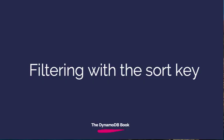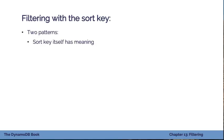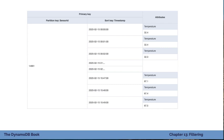Let's move on to the second most common filtering strategy: filtering with the sort key. There are two big patterns here. The first is when the sort key itself has meaning. Going back to the IoT example where we have a sensor sending up readings — the partition key is that sensor ID and the sort key is the timestamp. The timestamp itself is meaningful, so you could search for records within a particular range, for example getting records between one minute after midnight and two minutes after midnight.